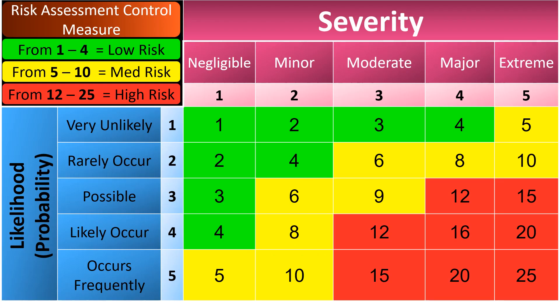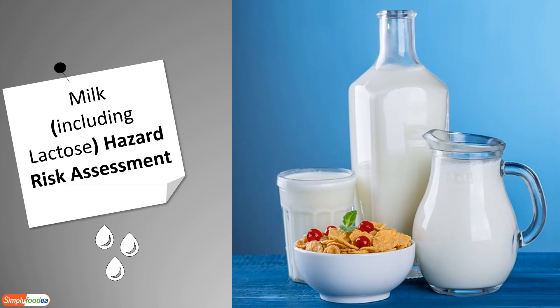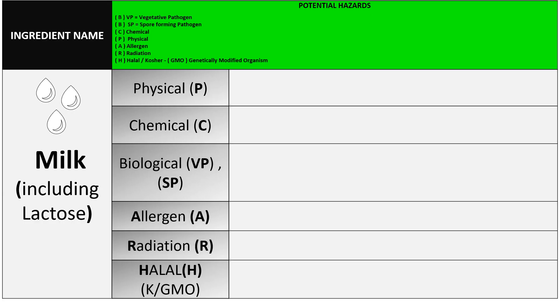Let's go to the main risk assessment table. Always keep the risk levels in mind: one to four is low risk, five to ten is medium risk, and twelve to twenty-five is high risk.